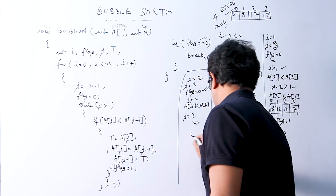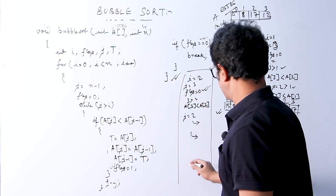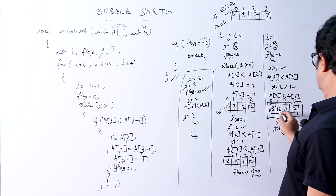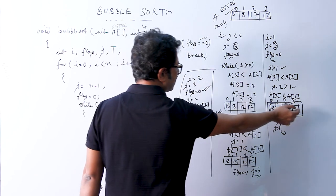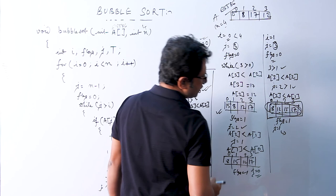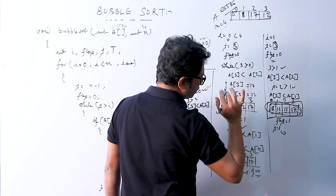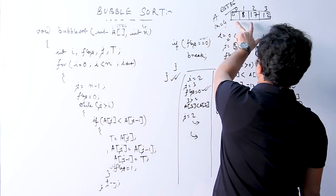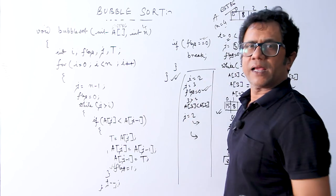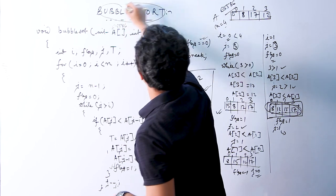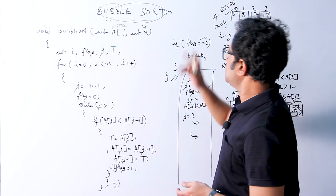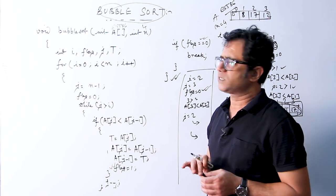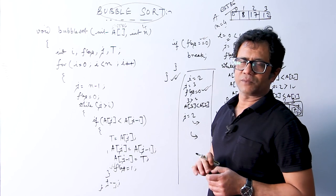The final state of the array is 8, 12, 15, 17 — beautifully sorted in ascending order, exactly as we wanted. This is how the code works on this array to sort it using this simple bubble sort technique from data structures. If you have any doubts or queries pertaining to this explanation, please post them in the comment section below. Thanks for watching this video.